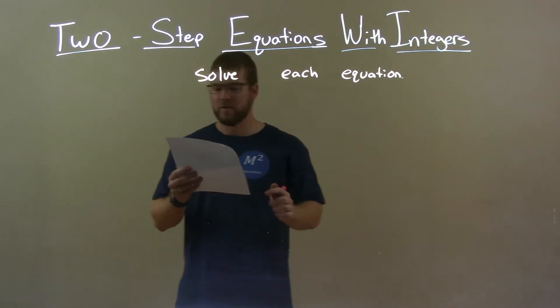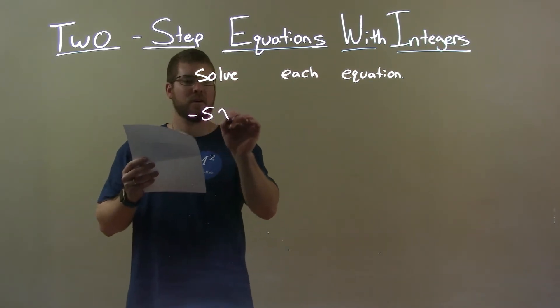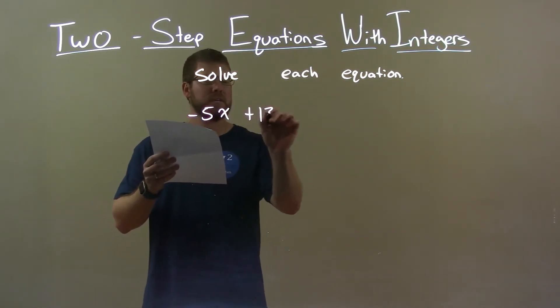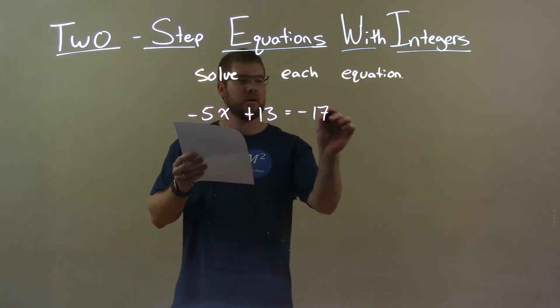Now, if I was given this equation negative 5x plus 13 equals negative 17.